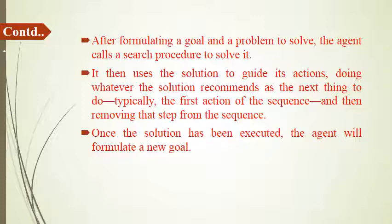After formulating a goal and a problem to solve, the agent calls a search procedure. It then uses the solution to guide its actions, doing whatever the solution recommends as the next thing to do — typically the first action of the sequence — and then removes that step from the sequence. Once the solution has been executed, the agent will formulate a new goal. There might be a single goal or the possibility of achieving multiple goals by performing multiple actions and tasks.